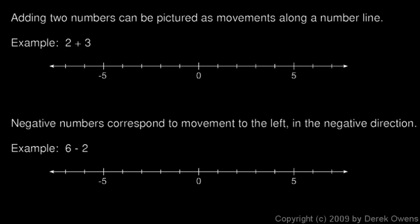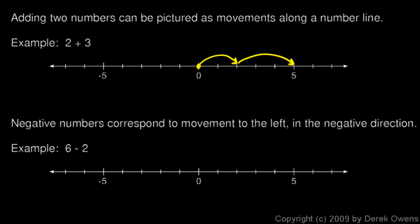We'll do two plus three first. Obviously you know that two plus three is five. What you want to get now is this mental picture. You start at zero, and this two — that's a positive two — means we go two to the right. Then plus three means we go three more to the right. From here we went one, two to the right, and then from there we went one, two, three to the right, and so we ended up at five. So two plus three equals five.